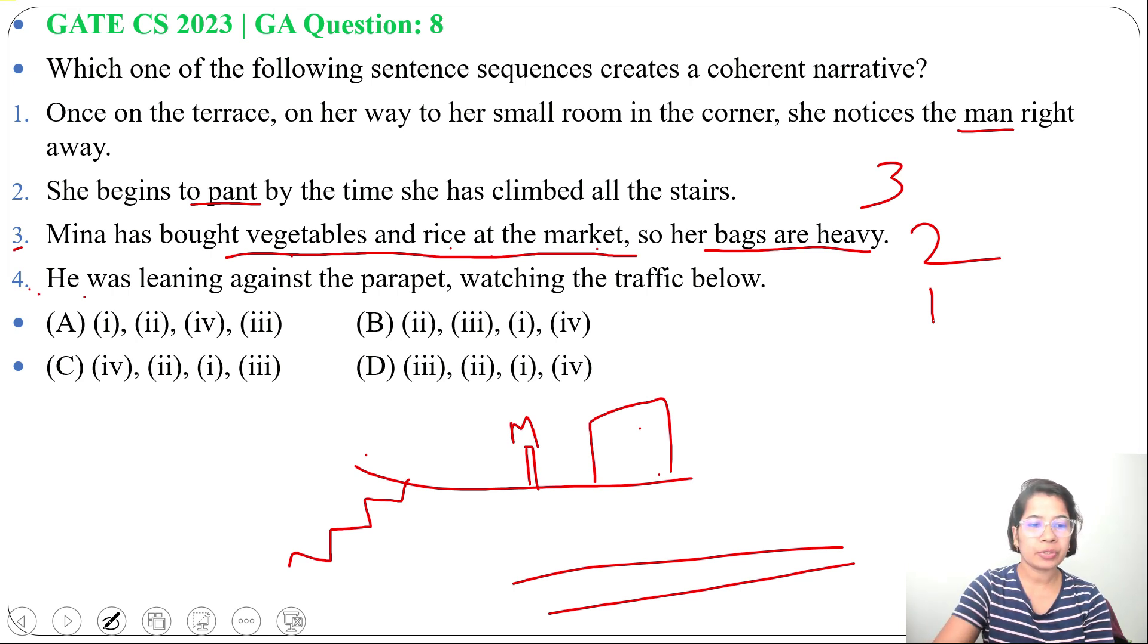Then what was that man doing? He was leaning against the parapet and watching the traffic below. So that man was leaning against the parapet. This is the parapet on the terrace, and he was watching the traffic below.